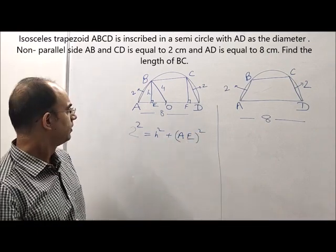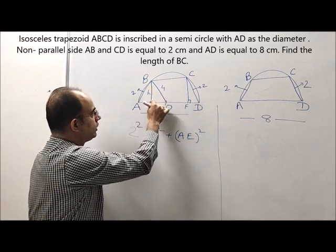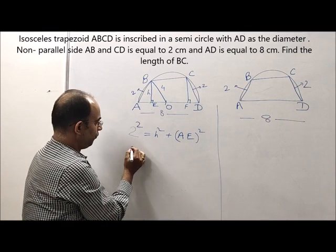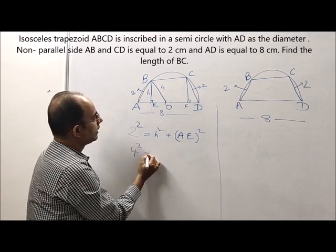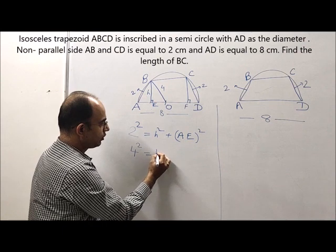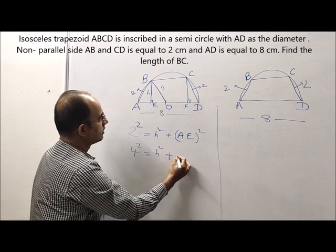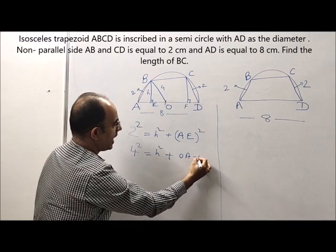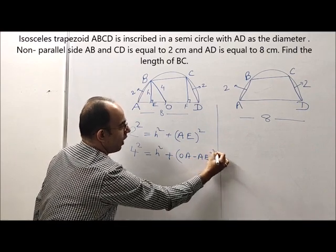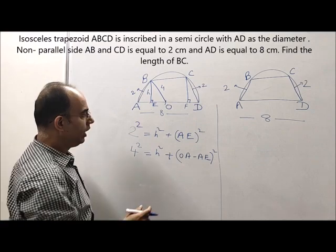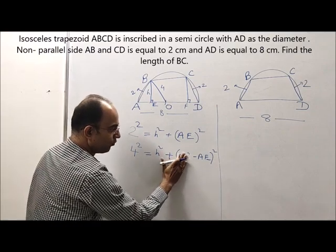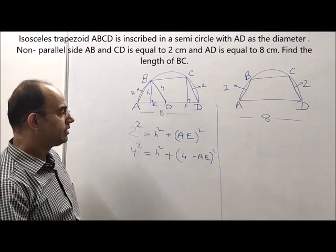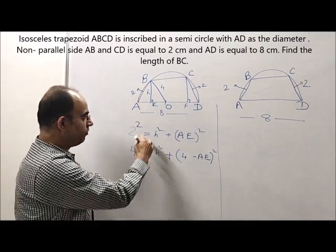Simple Pythagoras theorem. Now in this triangle, let us again apply Pythagoras theorem: 4 square is equal to H square plus (OA minus AE) whole square. And I know OA is 4, so substitute 4: 4 minus AE whole square.